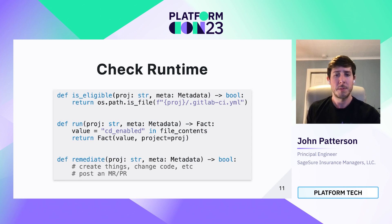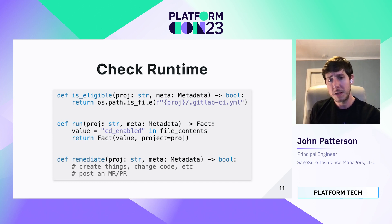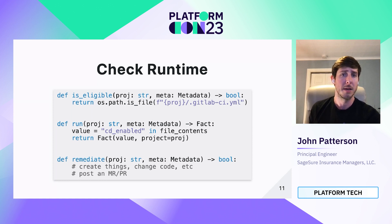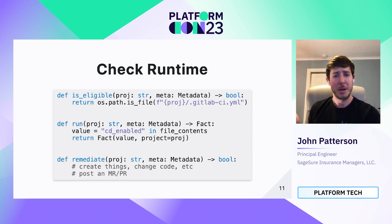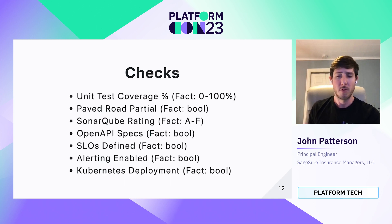Optionally, we have this remediate step. You can do all sorts of things in here — you can change the code to make it compliant with the check. In this case, we could throw CD_enabled inside of the file contents and push it up, either commit straight to master or make an MR. Another example that we've used is calling Grafana APIs to create a dashboard for the service. Really, the sky's the limit there.